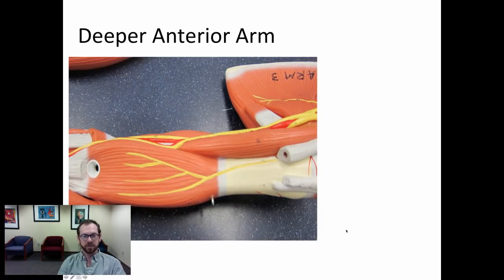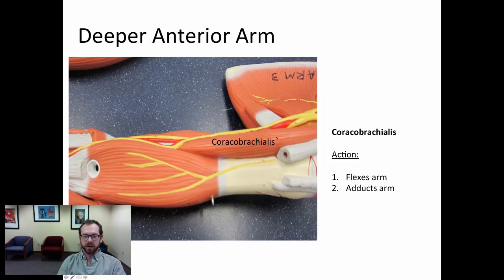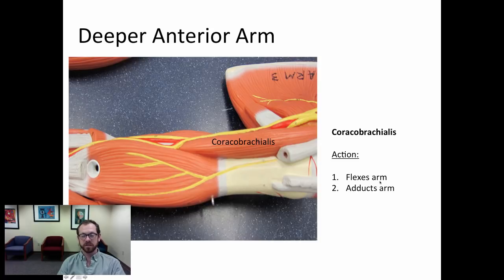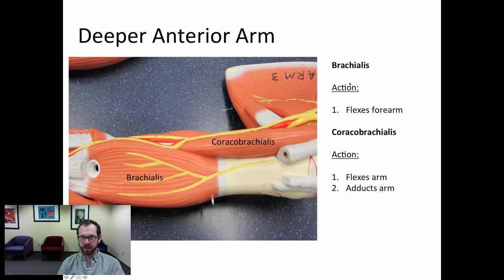Deep to the biceps brachii is the coracobrachialis, whose actions are to flex and adduct the arm. Because it flexes the arm, it is a synergist to the biceps brachii. Also present is the brachialis, another synergist to the biceps brachii, which flexes the forearm.